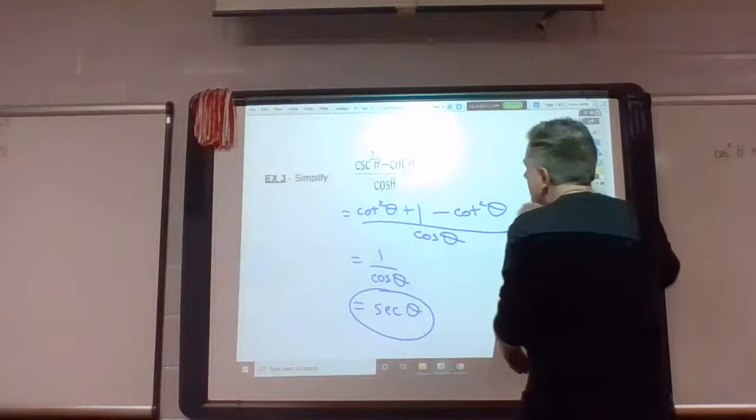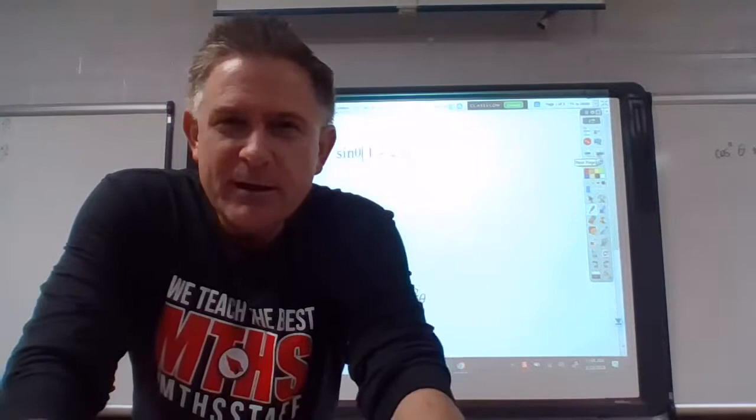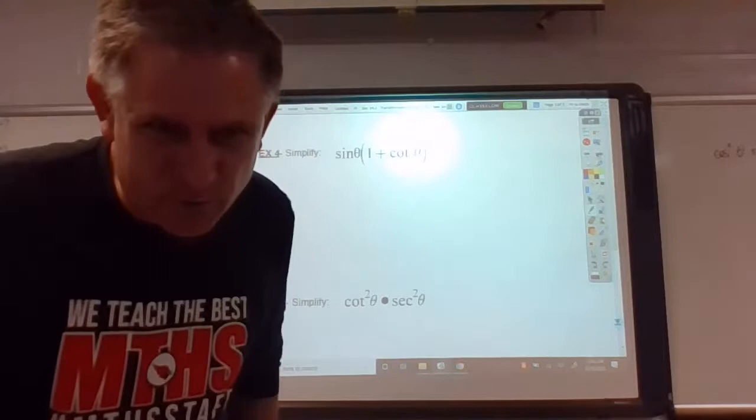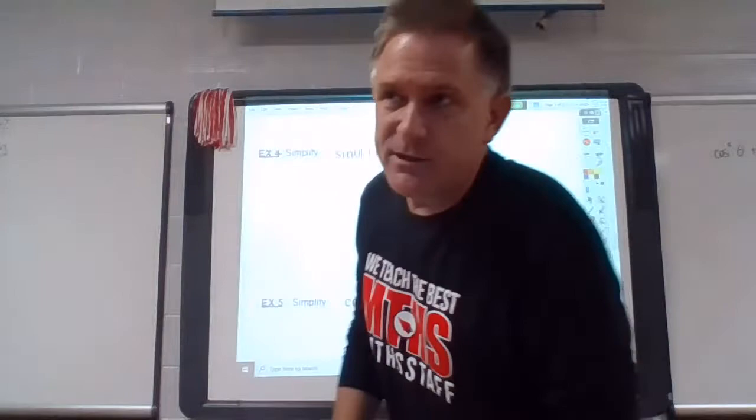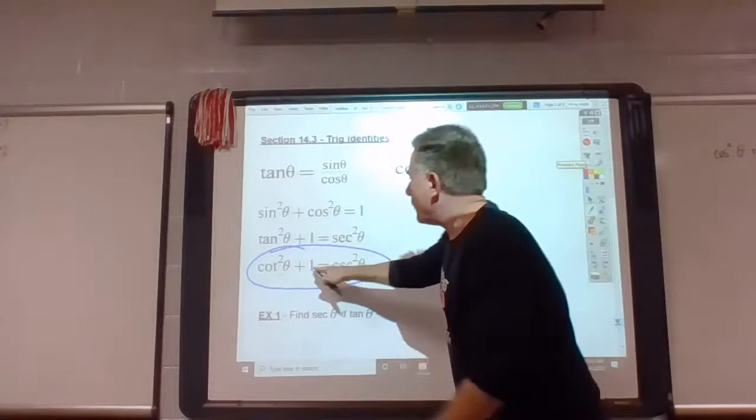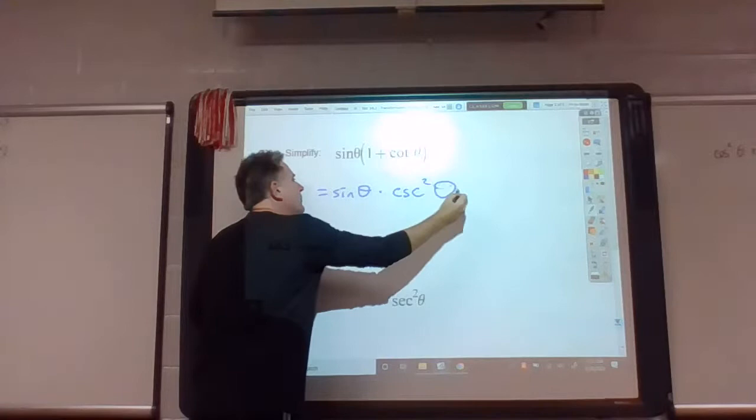All right, four. You'll get good at these eventually. One thing you almost never would do when you're presented with a problem like number four is distribute. Some people see this problem and they're like, oh, I want to write this as sine plus sine cotangent squared, I want to distribute. It just makes it uglier. We're trying to make things look simpler. So look at one plus cotangent squared and say to yourself, do I know anything about one plus cotangent squared? I already have it circled. Delightful. One plus cotangent squared is cosecant squared. Yes, direct substitution.